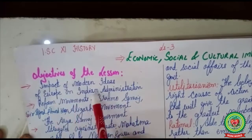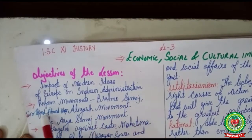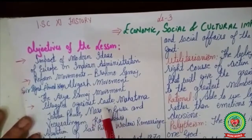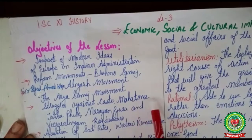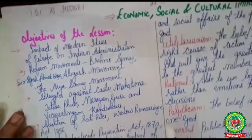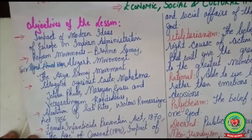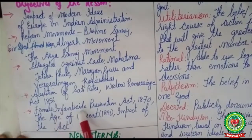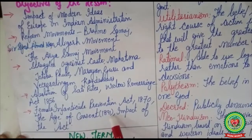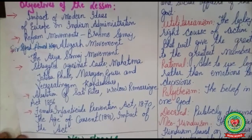The objectives are: to understand the impact of modern ideas of Europe on Indian administration; reform movements — including Brahmo Samaj, Syed Ahmad Khan and his Aligarh Movement, and the Arya Samaj movement; struggle against the caste system — contribution of Mahatma Jyotiba Phule, Narayana Guru, and Veeresalingam Kandukuri; abolition of Sati; the Widow Remarriage Act of 1858; Female Infanticide Prevention Act 1870; and the Age of Consent Act 1891.